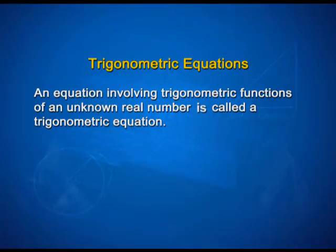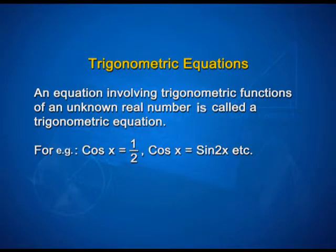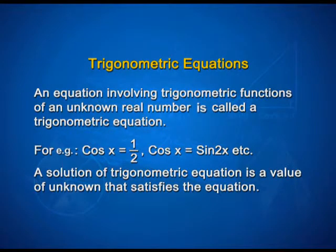An equation involving trigonometric functions of an unknown real number is called a trigonometric equation. For example, cos x is equal to 1 upon 2, cos x is equal to sin 2x, etcetera. A solution of a trigonometric equation is a value of the unknown that satisfies the equation.